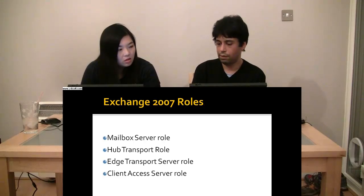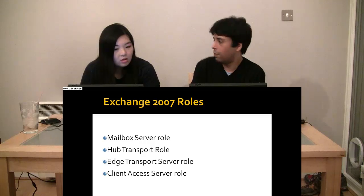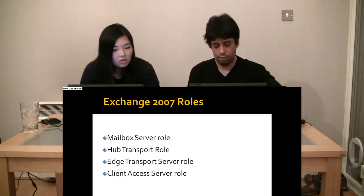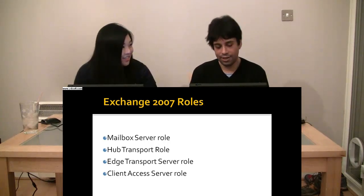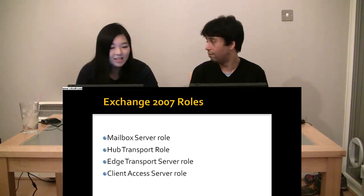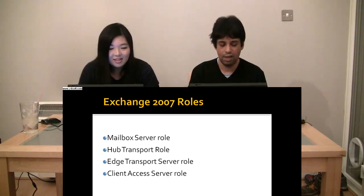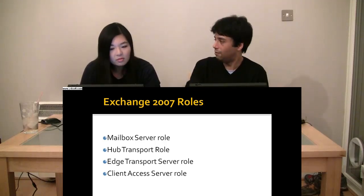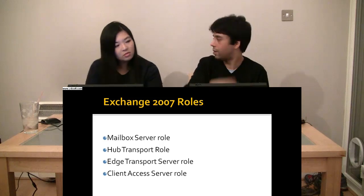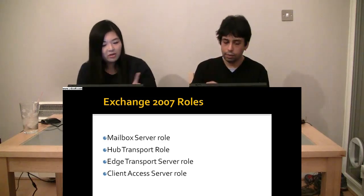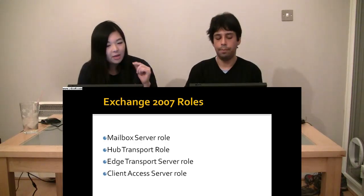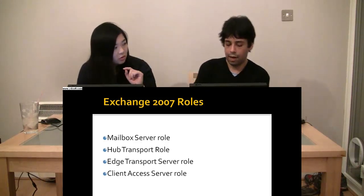If we lose the hub transport server here, what's going to happen? We're not going to be able to send or receive email. So how can we have high availability from the hub transport service? Have a redundant one — have two of them. Yes, just have two of them. Do I need to get a network load balancer? No. Because the mailbox server is going to look for the hub transport server for submission. If that's not available, it's just going to be submitted to another one. So just to be clear, those server names you see when you type the MX record — that points to the hub transport? That would be a hub or an edge transport, depending on how big you are.